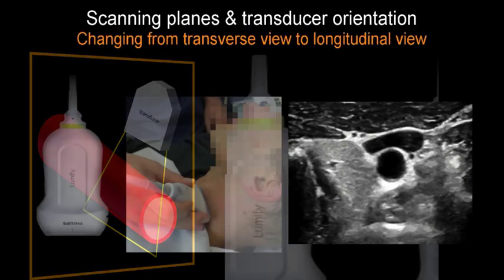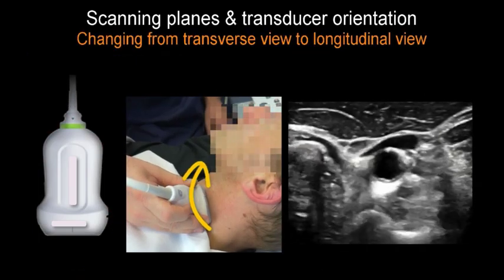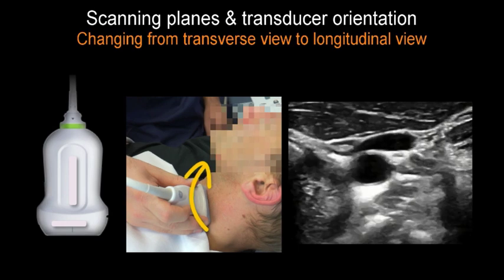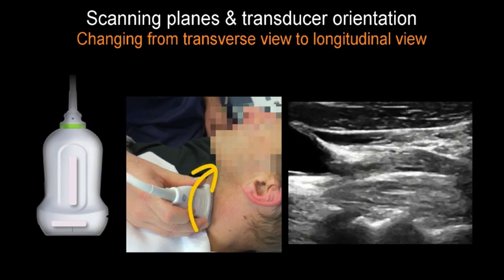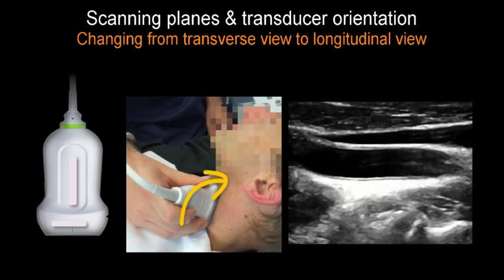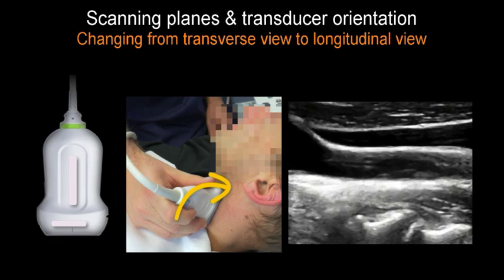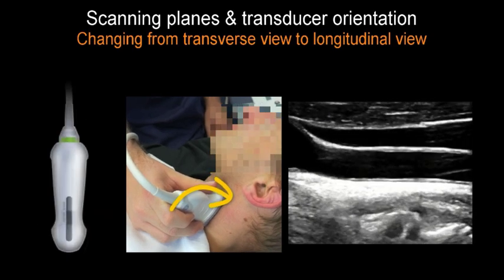We can change the scanning plane from transverse to longitudinal simply by keeping the base of the transducer still and turning the top of the transducer by 90 degrees.